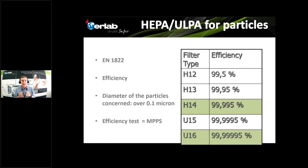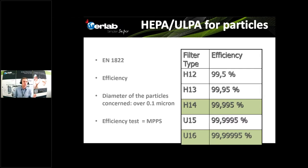Once the most penetrating particle size is determined, we emit a large quantity of those particles to measure filter efficiency. At AirLab, in our green fume technology, we use two types of filters: H14 filters with 99.995% efficiency, and U16 filters that are 100 times more efficient than H14. You should always ask a manufacturer what type of HEPA filters they use, because H12 filters are 100 times less efficient than H14.